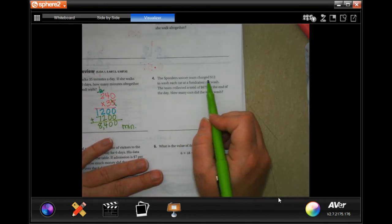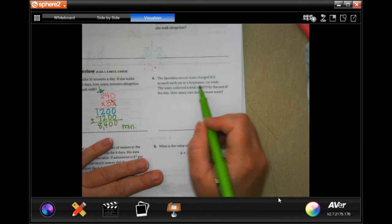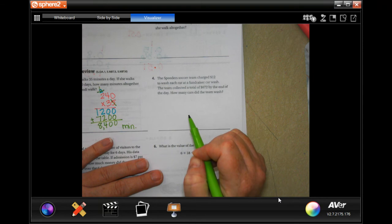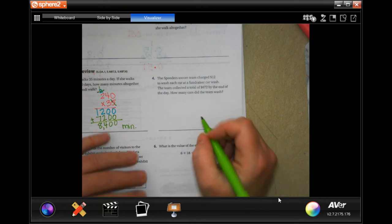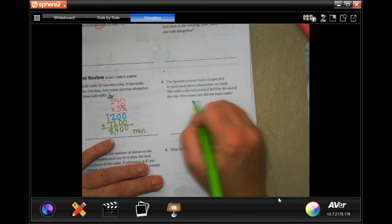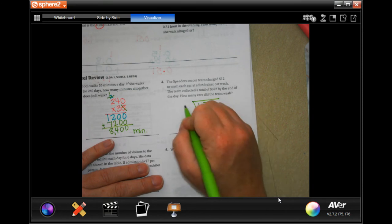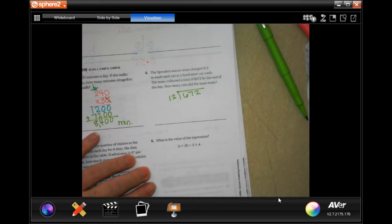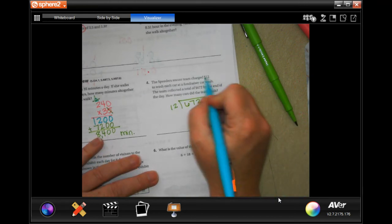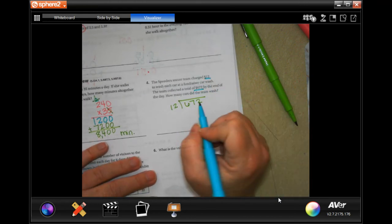The speeders soccer team charged $12 to wash each car to fundraise a car wash. The team collected a total of $672 by the end of the day. How many cars did the team wash? So 672 inside the box, 12 outside the box. Underline those bad boys so you know where they came from.